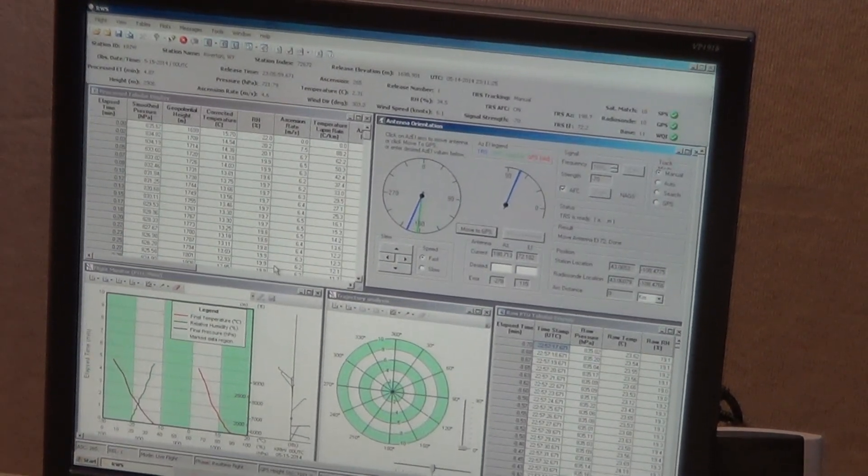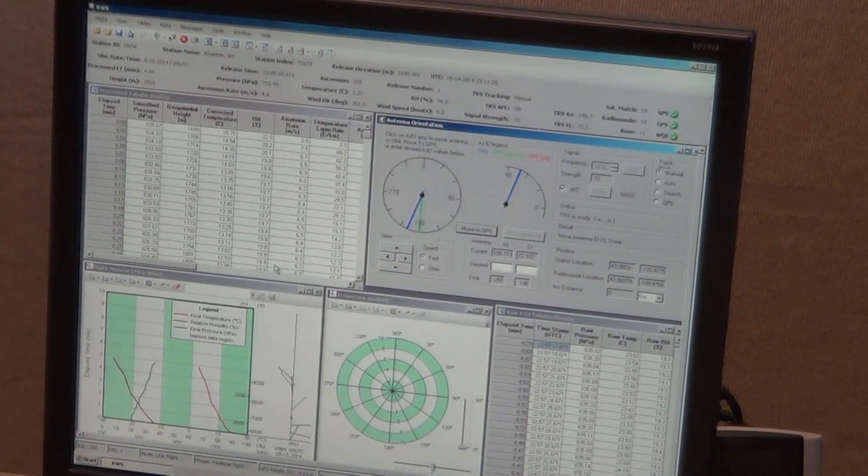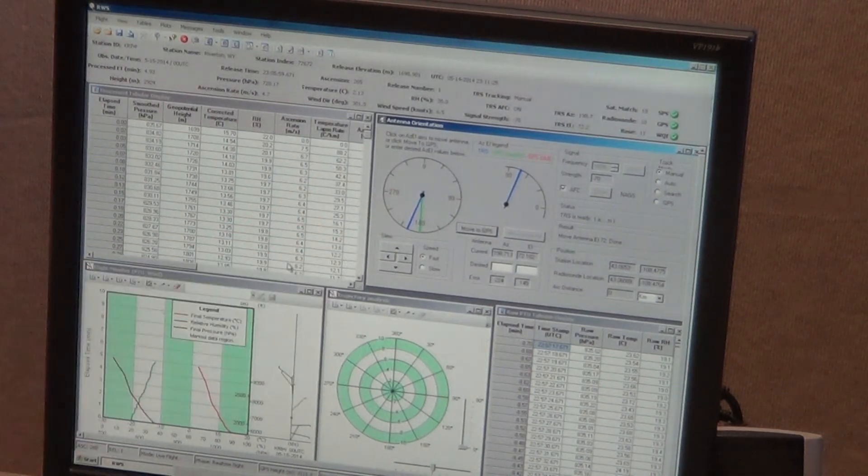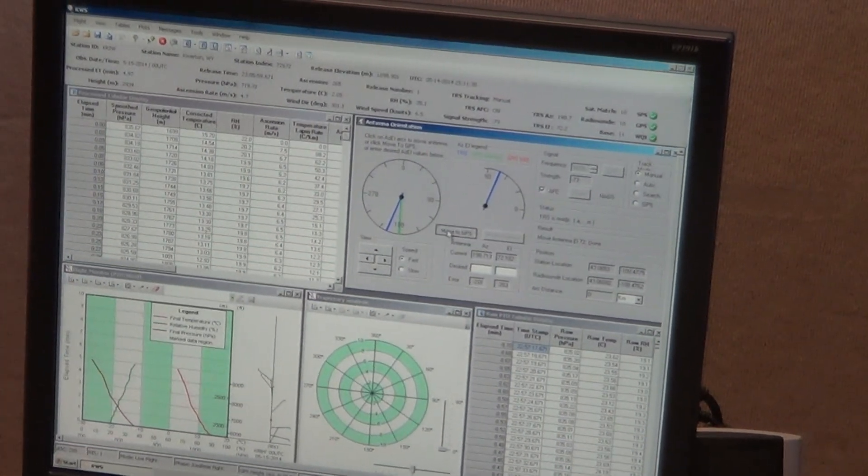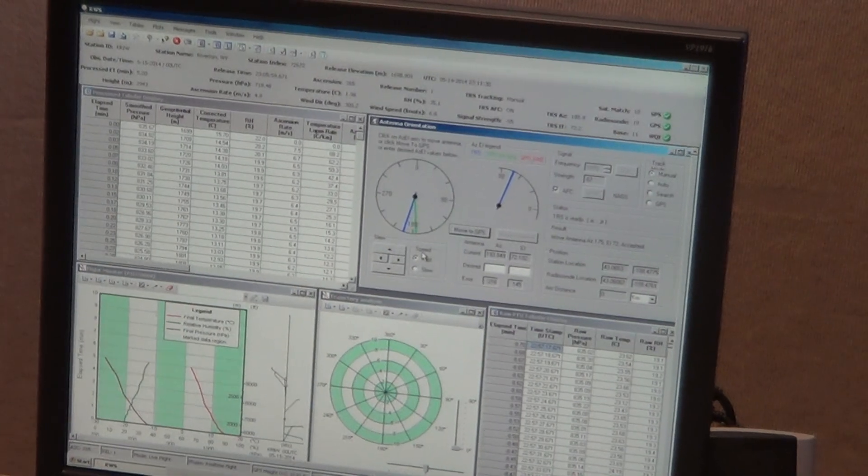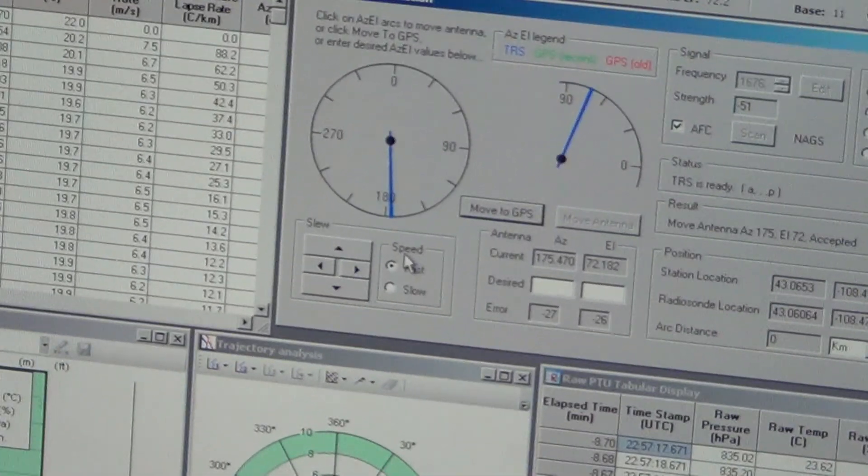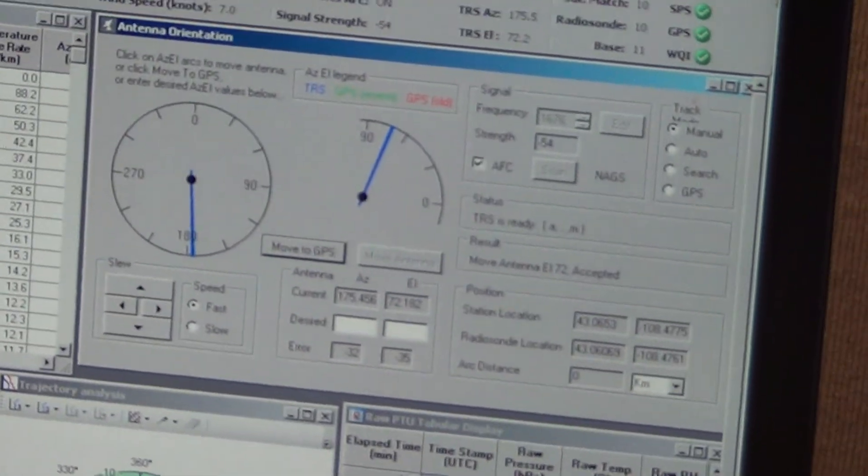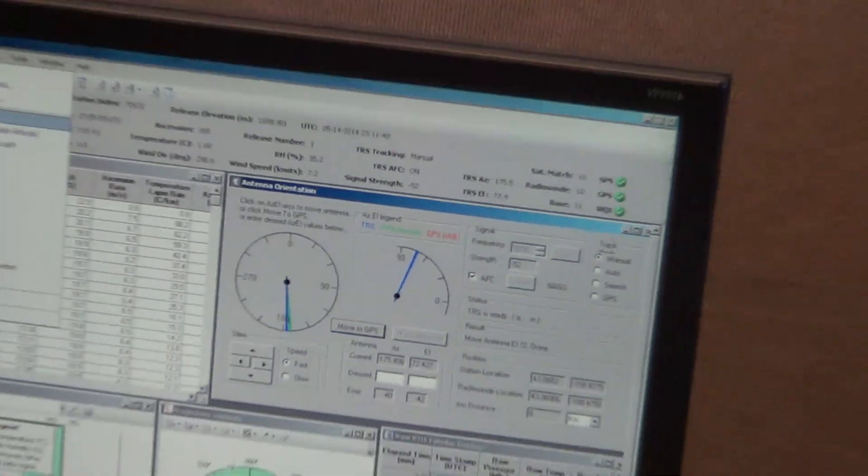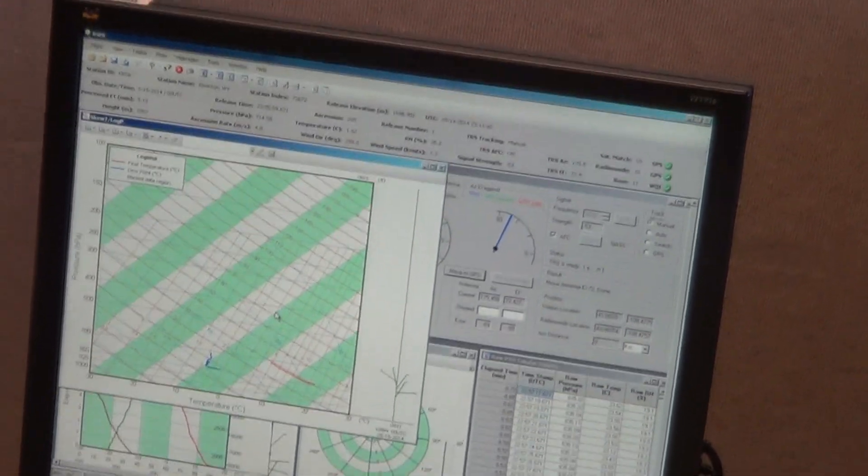All right. Now we're back inside and we're going to start collecting data. So, right here is our antenna orientation. Meaning that we are tracking the radiosonde we just launched. And now we'll pull up a plot to see what our temperature data and humidity data looks like.